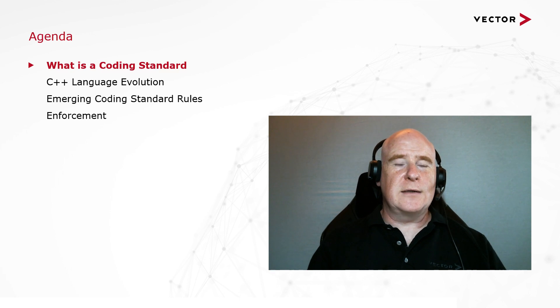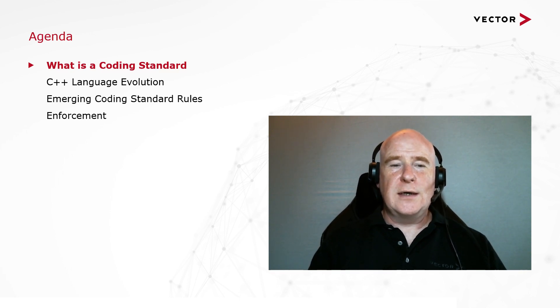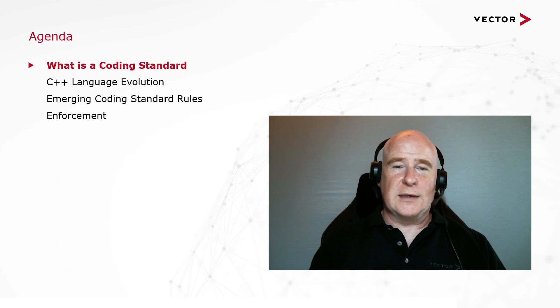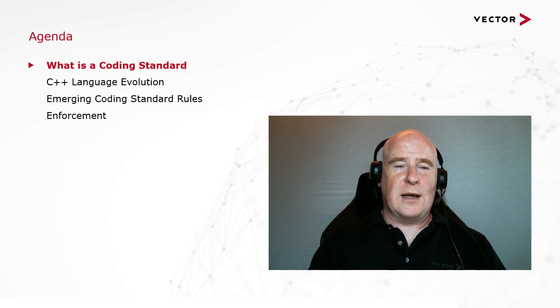First we'll look at what is a coding standard, then have a brief look at the C++ language evolution, then look at some of the emerging coding standard rules — I'm going to use the words rules and guidelines interchangeably — and then we'll have a look at enforcement of coding standards. The primary aim of a coding standard is to restrict the use of a programming language to a safer subset of the language.